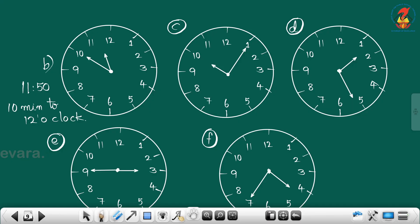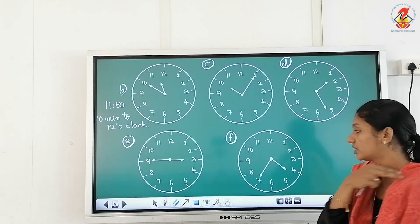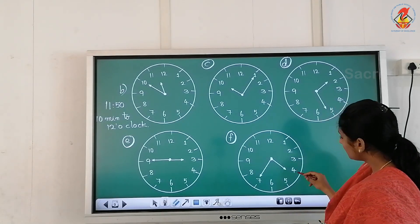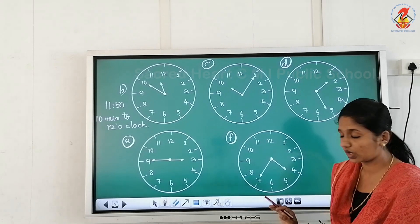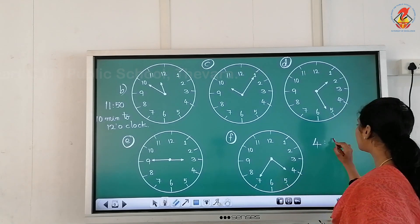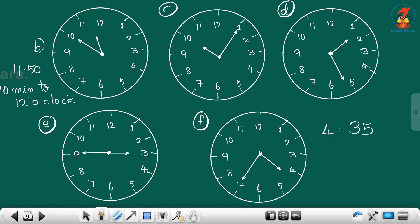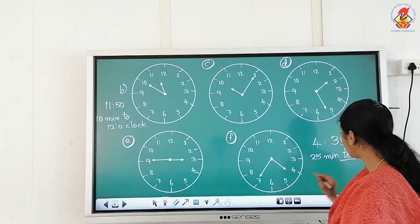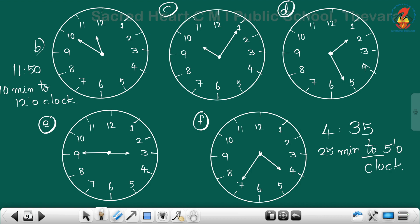Then we can do the last question. C, D, and E you can do as homework. The shorter hand is between four and five — just past four, not yet reached five — so the time is four. Counting thirty and thirty-five, so the time is four thirty-five. Another way: counting five, ten, fifteen, twenty, twenty-five minutes to five o'clock, because the longer hand is on the left-hand side.